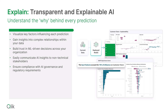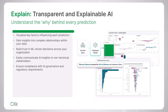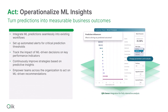In addition to predictions, Qlik AutoML also provides full explainability so you understand the why behind these predictions. After predictive models are created, they can be published into Qlik Sense and associated with your current data for real-time exploration and what-if scenario planning, enabling you to take action on your findings.